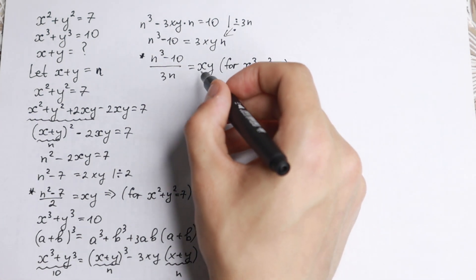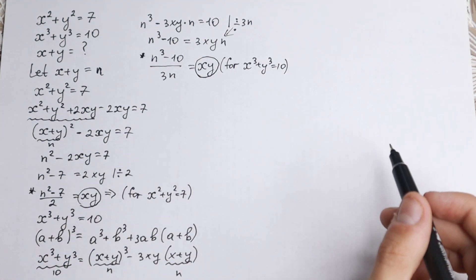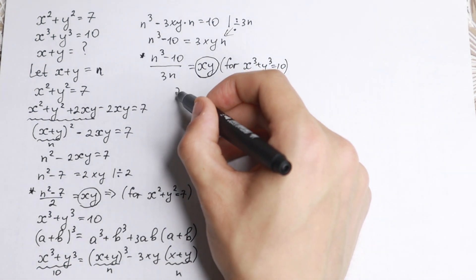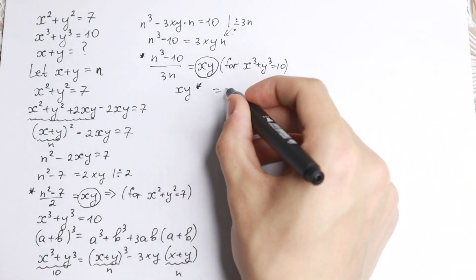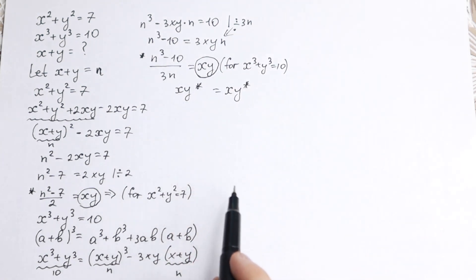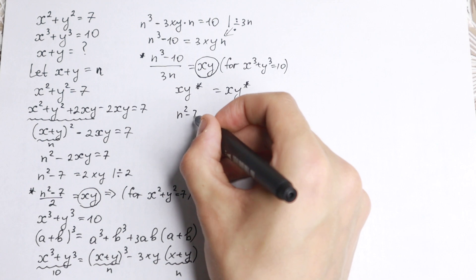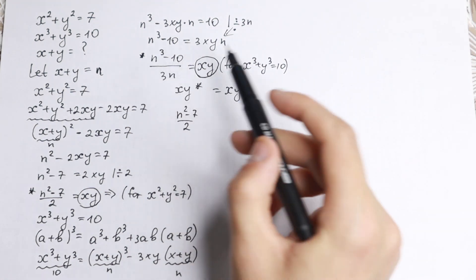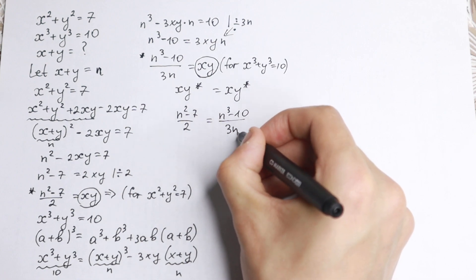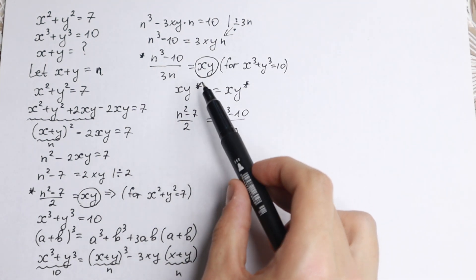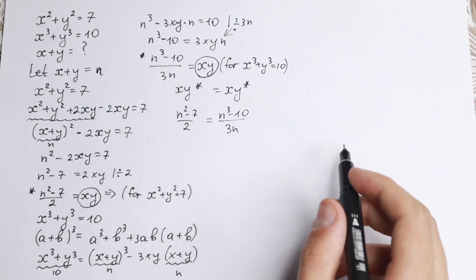We've found xy two ways: from the first equation, xy equals (n squared minus 7) over 2; from the second equation, xy equals (n cubed minus 10) over 3n. Now let's set these equal: (n squared minus 7) over 2 equals (n cubed minus 10) over 3n.